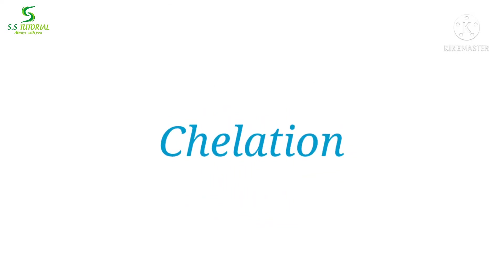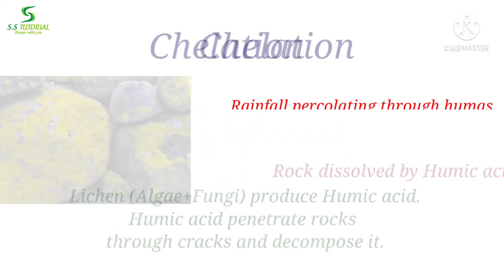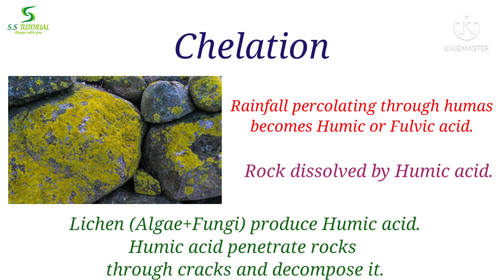When rocks are dissolved by weak acid like humic acid, which is released by plants or living organisms, this process of chemical weathering is known as chelation. Lichen, a combination of algae and fungi, produces a considerable amount of humic acid which can penetrate rocks through cracks and decompose them.